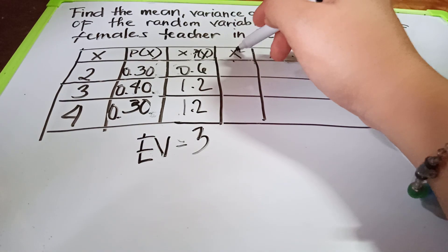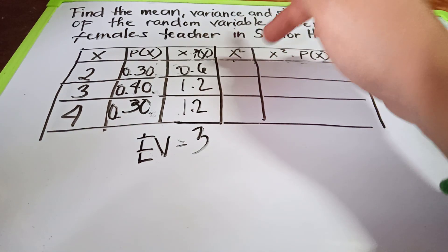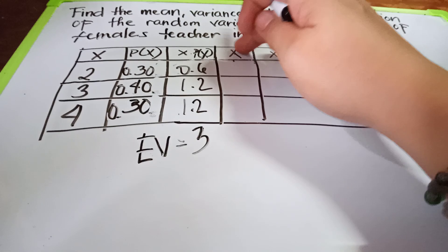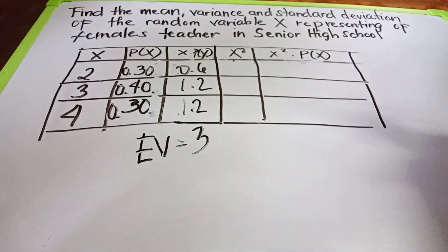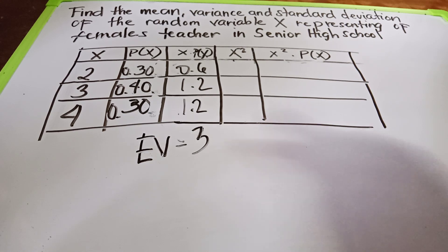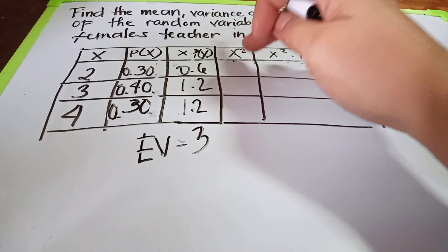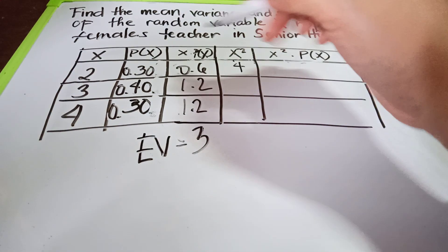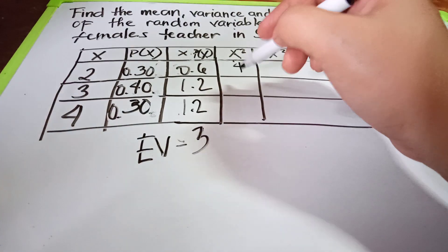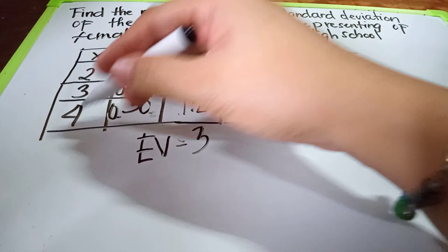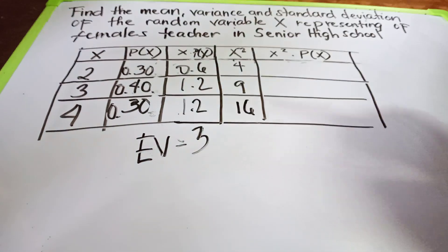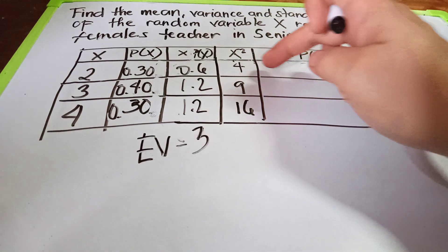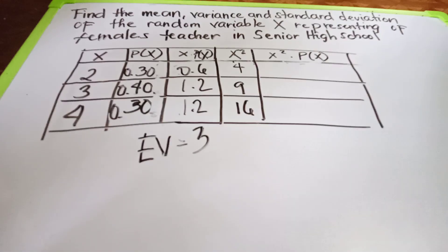Next, we compute the x² column. Two squared is four, three squared is nine, and four squared is sixteen. We then need to multiply each x² value by its corresponding probability P(x) to get the x²·P(x) column.